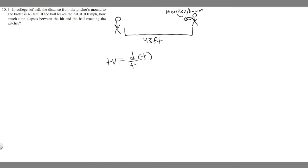Let's get this in terms of T. If we multiply both sides by T, you're going to get that TV equals D. And then if we divide by V, we get that T equals D over V, so our distance divided by our velocity.